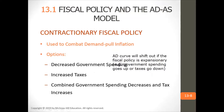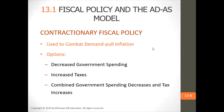Contractionary fiscal policy is used to stop demand-pull inflation. They do that to decrease government spending and increase taxes. They do this to stop inflation — right now in Canada inflation is running quite high.